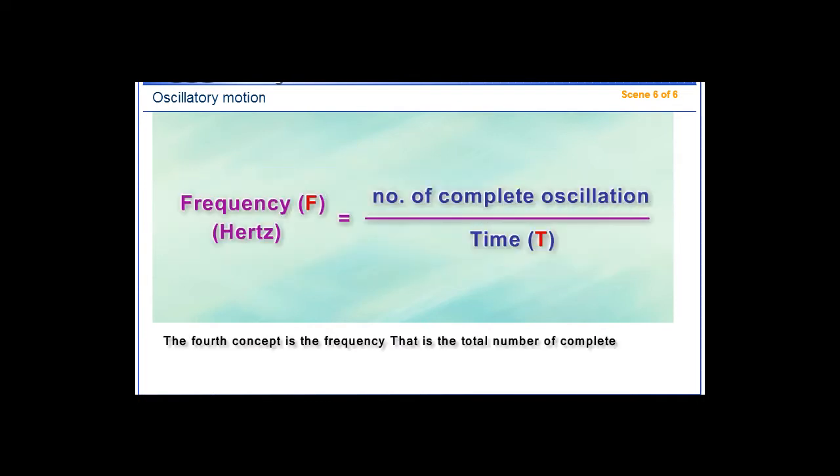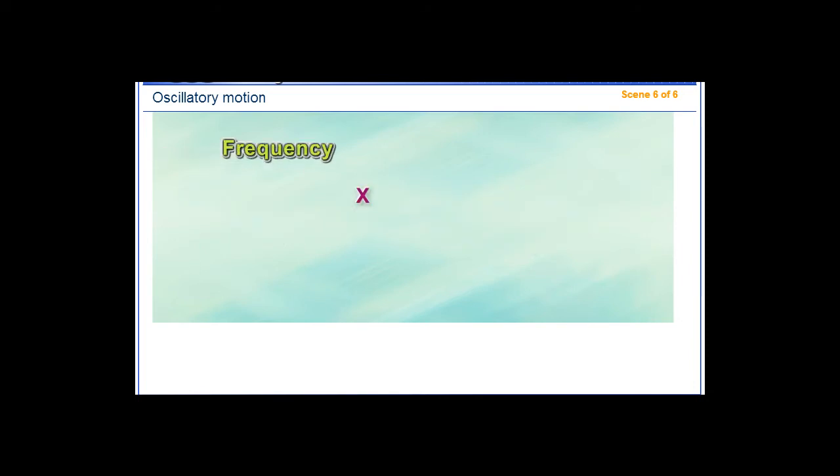The fourth concept is the frequency. That is the total number of complete oscillations made by the oscillating body in one second, and it is measured in hertz. From this rule, we can say that frequency times periodic time equals one.